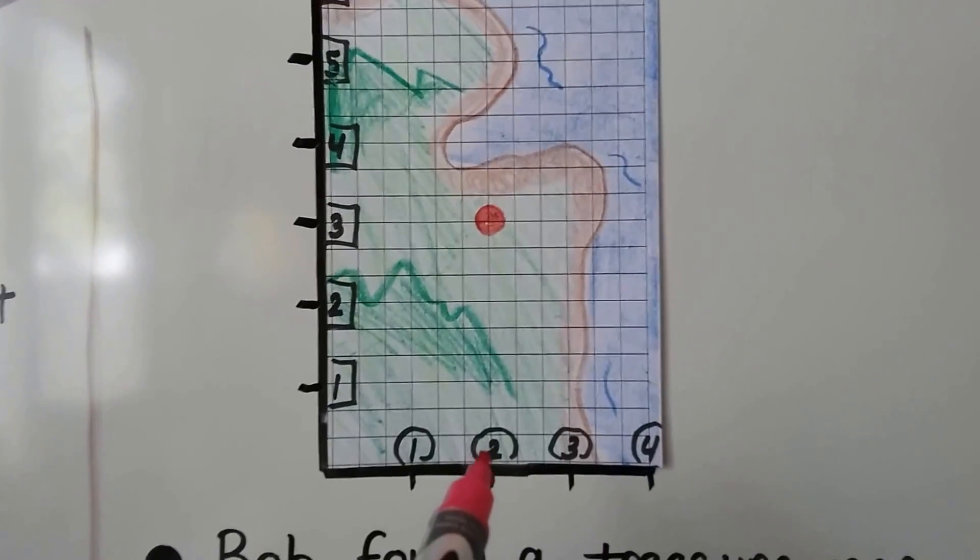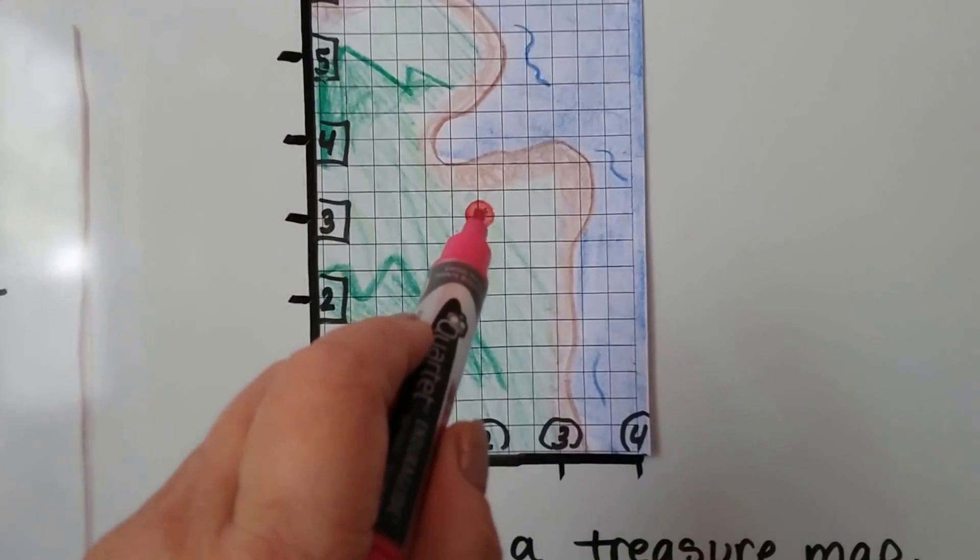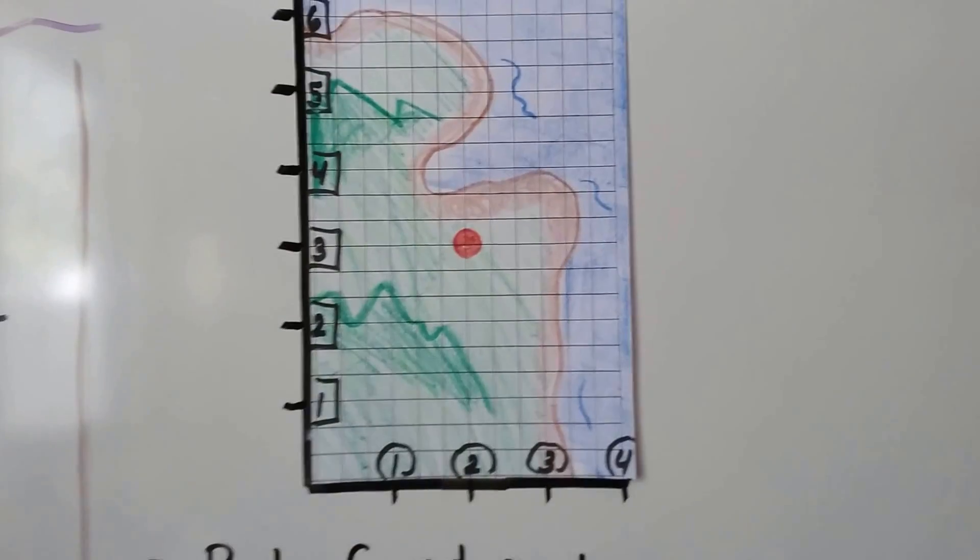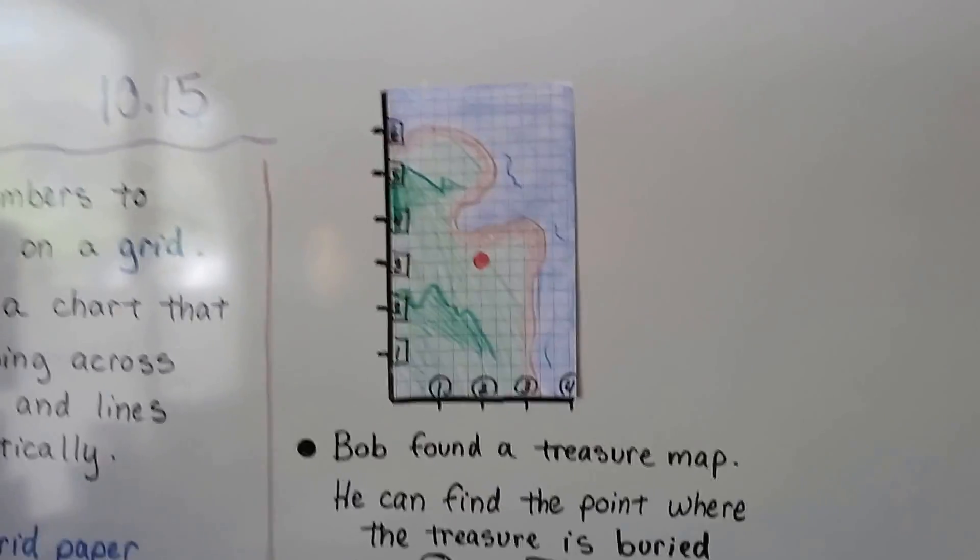All we have to do is find the 2 in the circle and follow its line up to where it meets the 3 in the square. You can find the buried treasure.